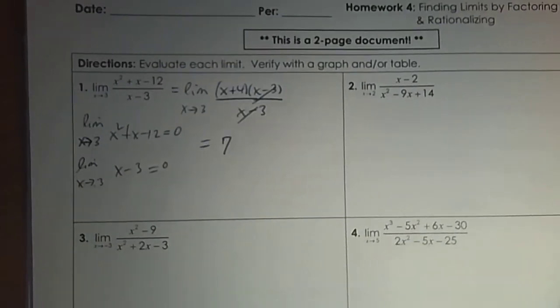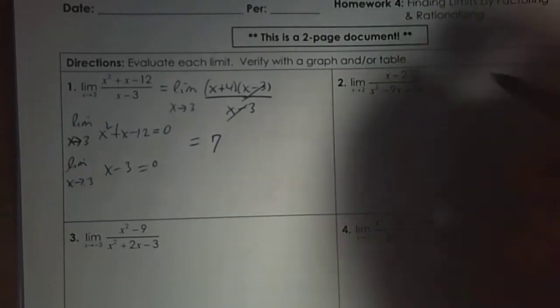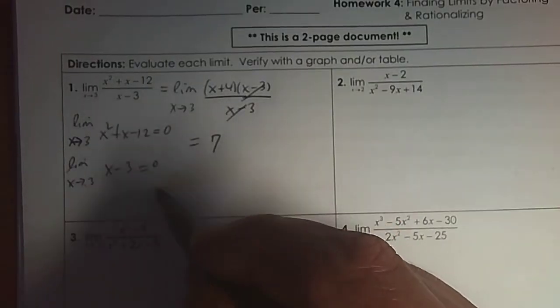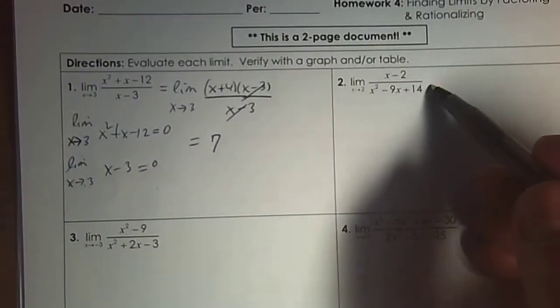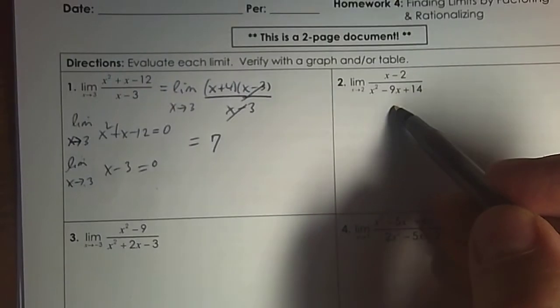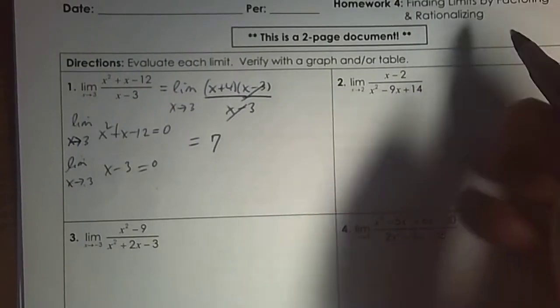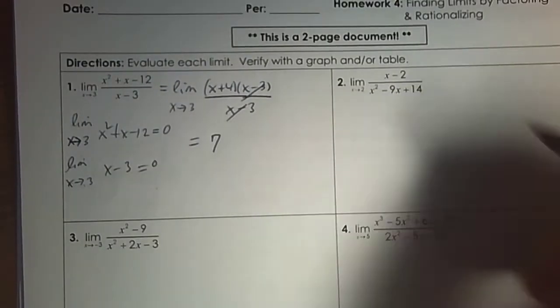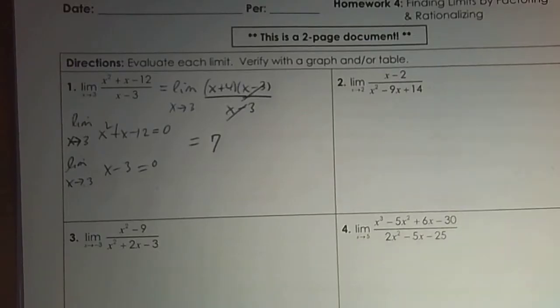Let's try that again. So I want to evaluate this limit. I'm not going to go through this work, but I want you to plug in. So plug in 2 into the top and bottom — you'll see it will be 0 over 0 when you do that evaluation.